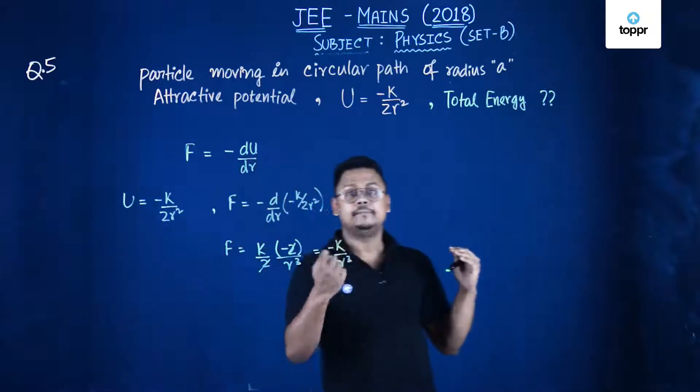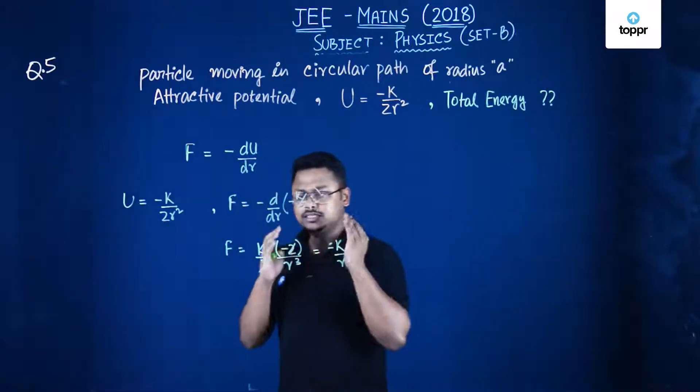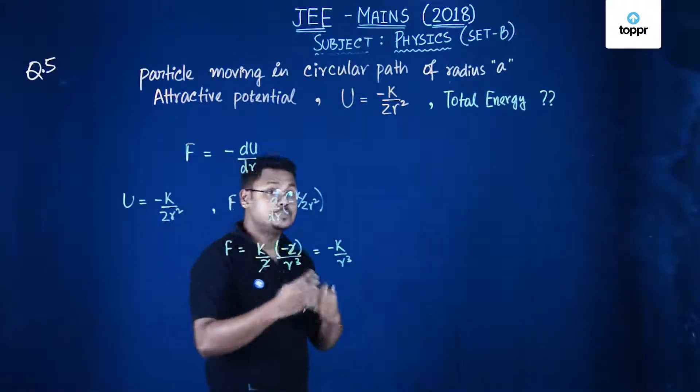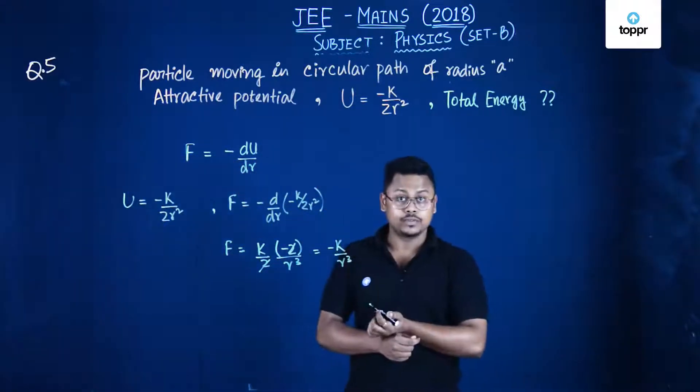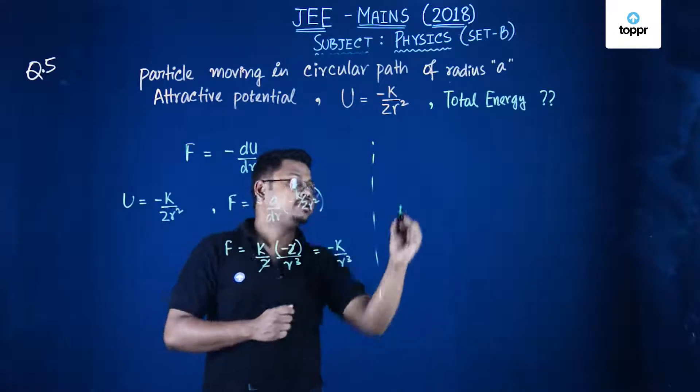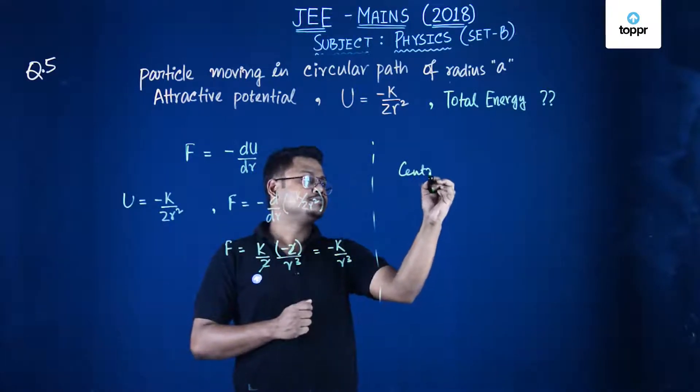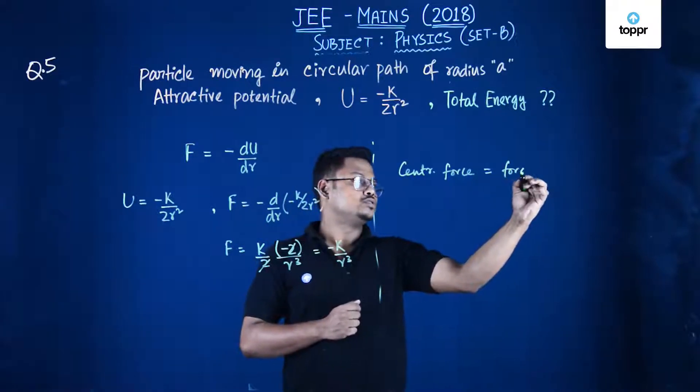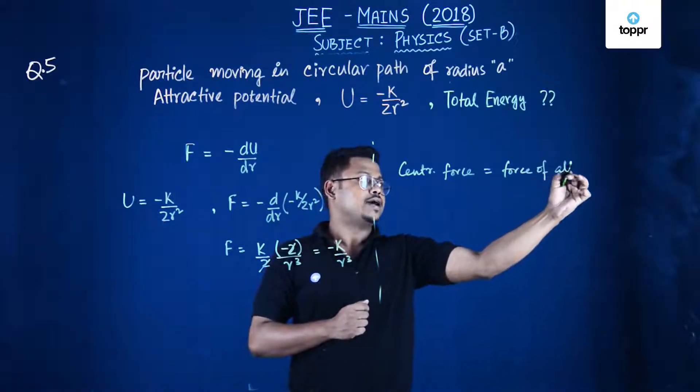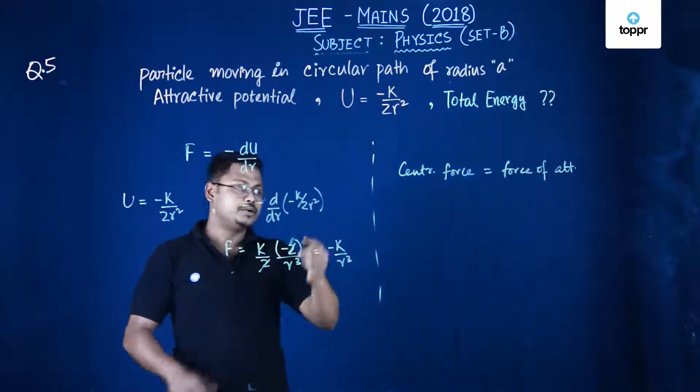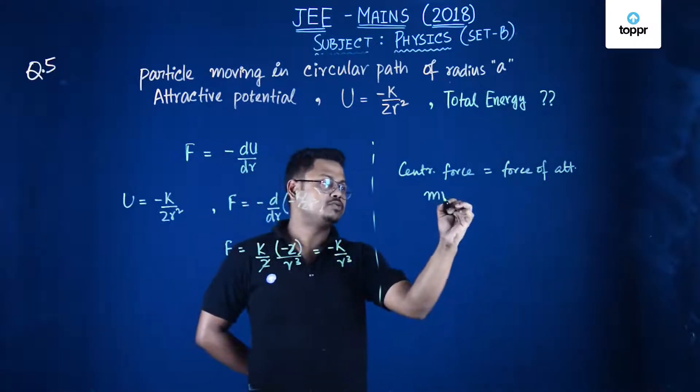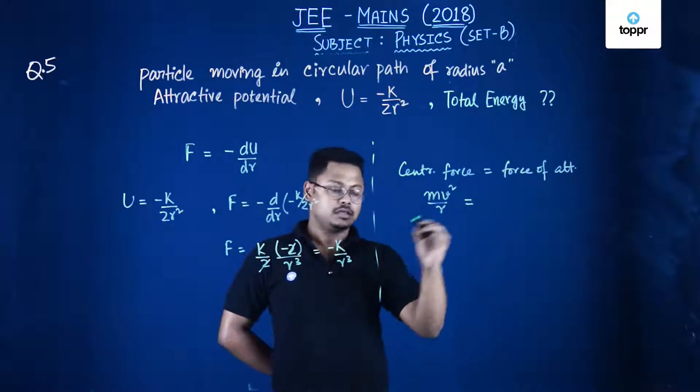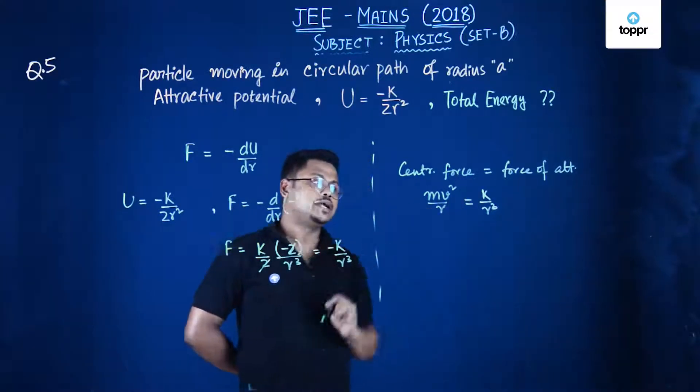That's why we are getting a minus sign. Now this force must be provided by the centripetal force. So we can equate centripetal force equals force of attraction. Centripetal force is mv square upon r equals k upon r cube.